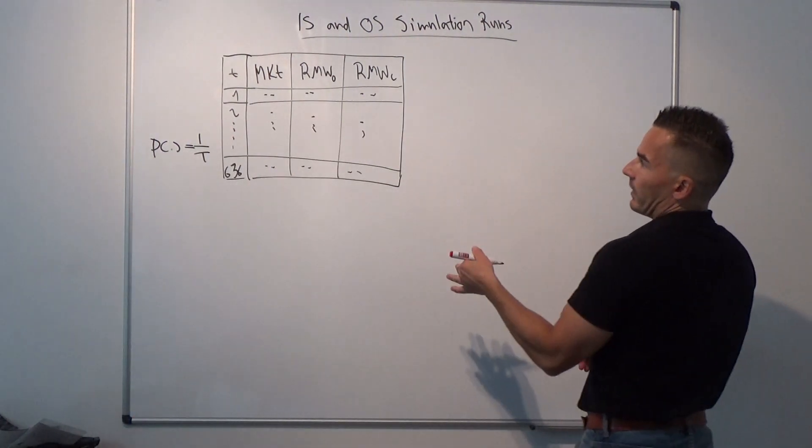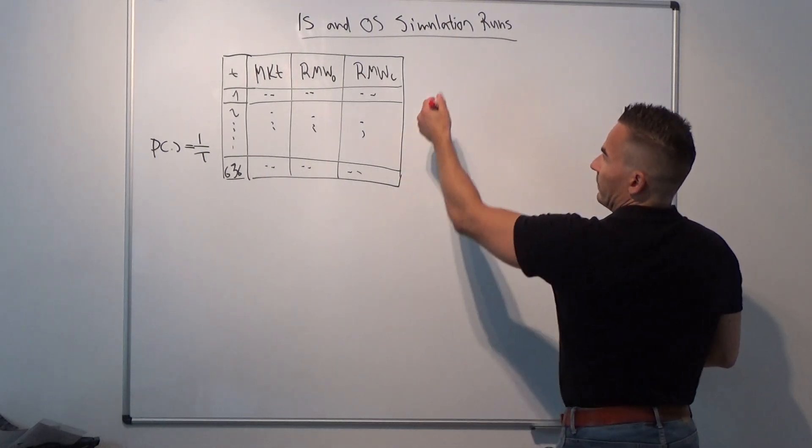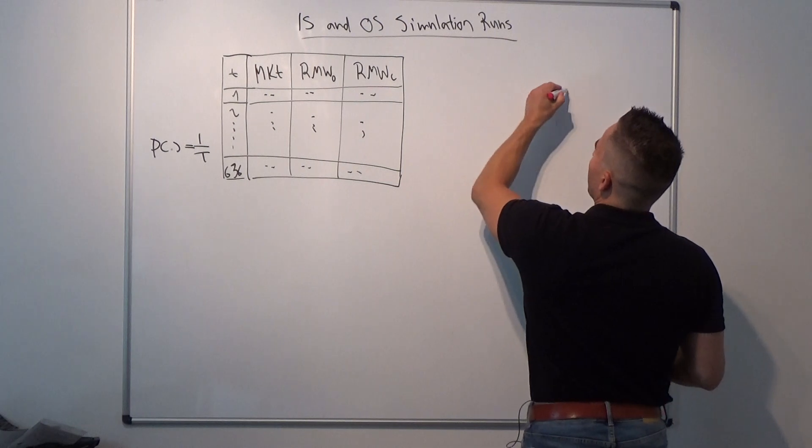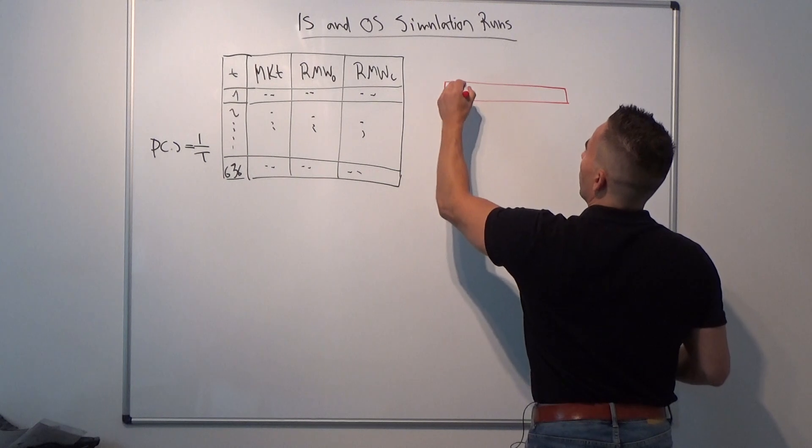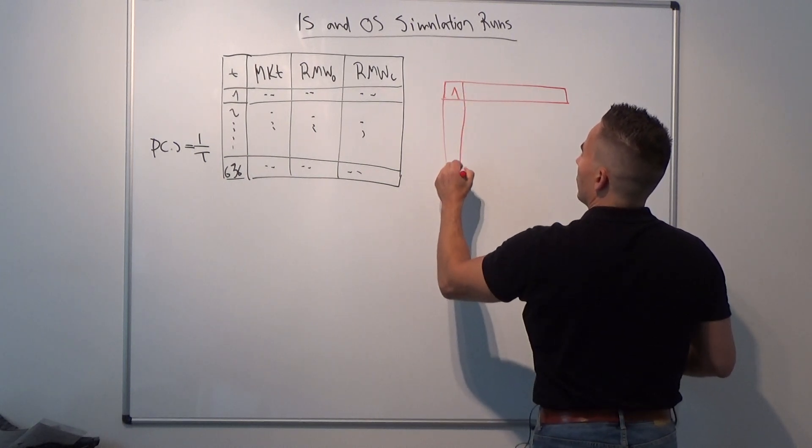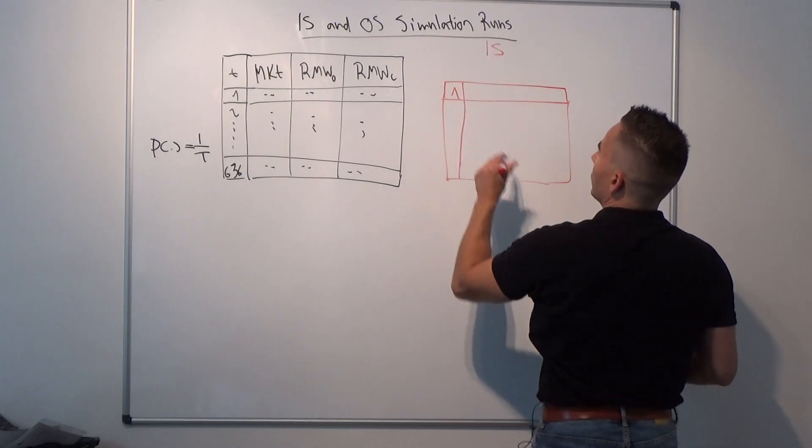Let's say in the first round we draw row number 7. We put it here and this becomes our row number 1 in our in-sample.